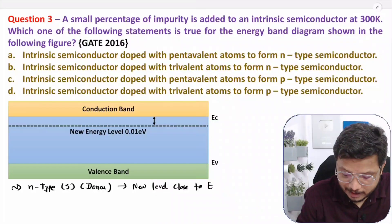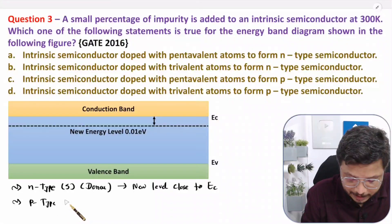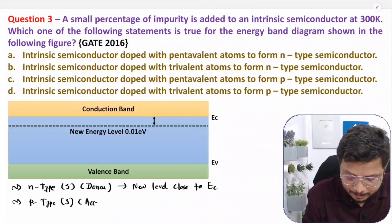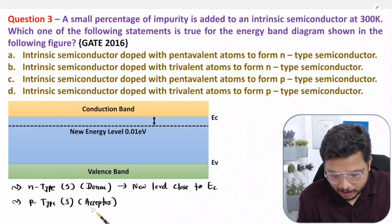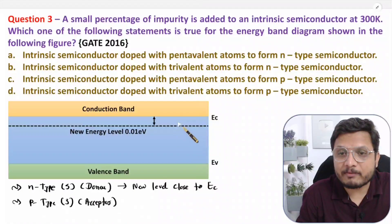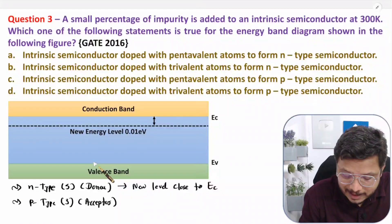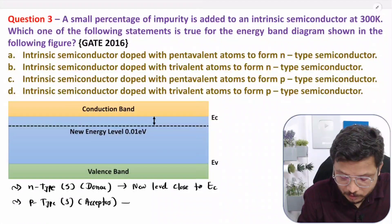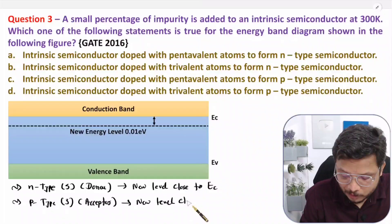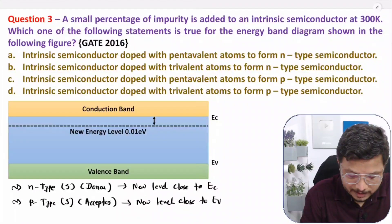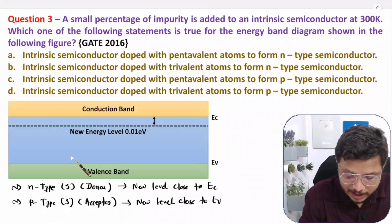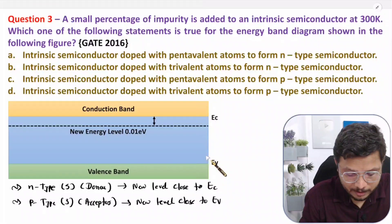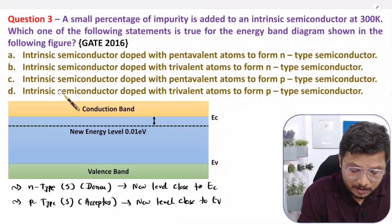In p-type semiconductor material we add trivalent acceptor impurities, which introduce holes as charge carriers. The forbidden energy gap also decreases, but here the new acceptor energy level gets shifted toward the valence band. The new energy level is close to Ev, appearing near the valence band edge in the forbidden gap.